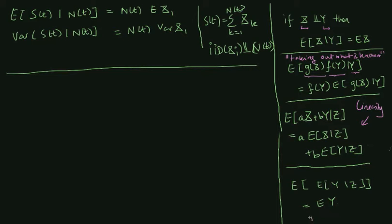One last rule is what we call the double expectation property — also called the tower property, or sometimes the definition of conditional expectation. If you take the expected value of the conditional expectation of Y given Z, this is just the same as the expected value of Y. The inner term is a stochastic variable because Z can take different values; before we decide which value Z takes, the mean of Y given Z is also stochastic, and taking the outer expectation returns the mean of Y.